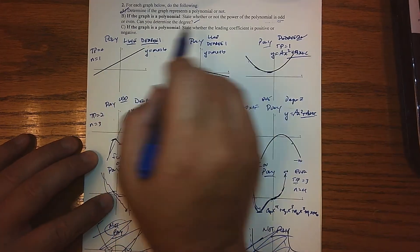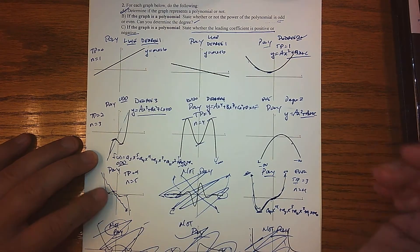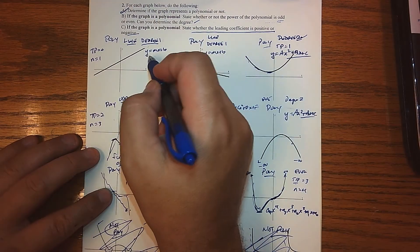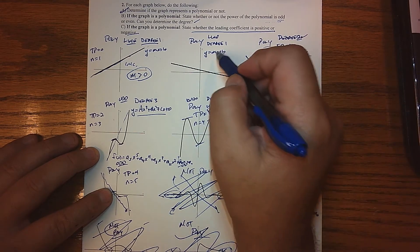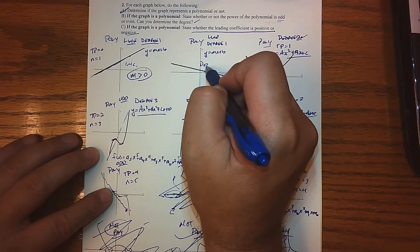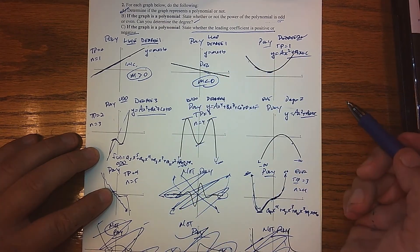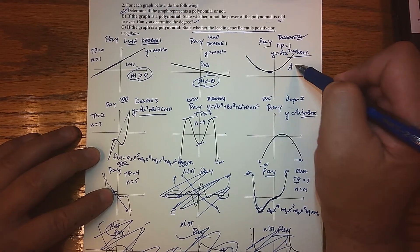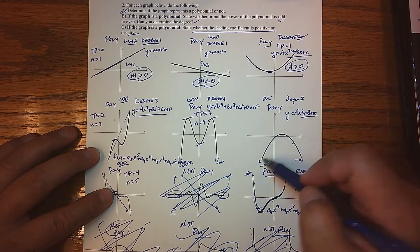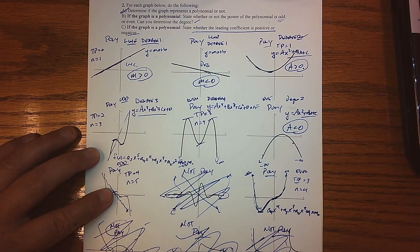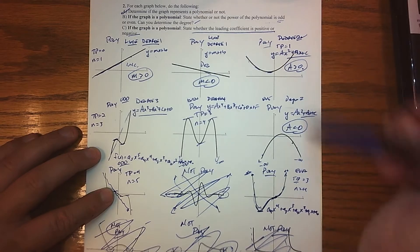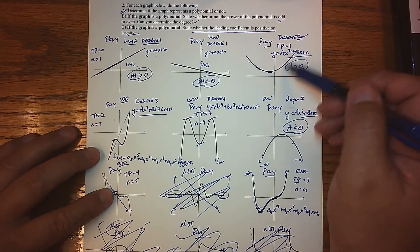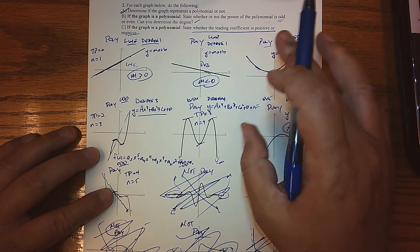The last thing they want us to do is, if the graph is a polynomial, state whether the leading coefficient is positive or negative. Think in terms of lines and parabolas. For a line that's generally increasing, the leading coefficient is positive. Here, since the general trend is decreasing, our leading coefficient m is negative. Since this parabola is opening upwards, the leading coefficient is positive. Since the parabola is opening downwards, the leading coefficient is negative. I'm basically using what we learned in Chapter 4 about increasing and decreasing lines — slope being positive or negative. That's essentially our leading coefficient. For quadratics, the leading coefficient told us about opening up or down, and we can mimic that for anything else.